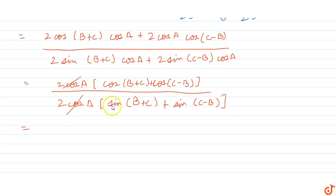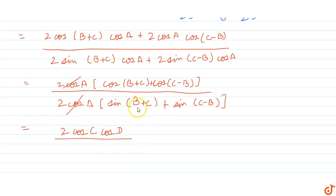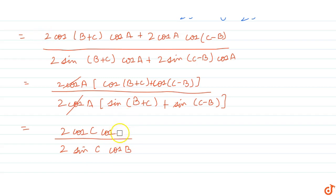The 2cos(A) terms cancel. Applying cos(C) + cos(D) = 2cos(C)·cos(D) to the numerator and sin(C) + sin(D) = 2sin(C)·cos(D) to the denominator — noting a correction: the variable should be B, not D — we get 2cos(B) in both numerator and denominator, which cancel.